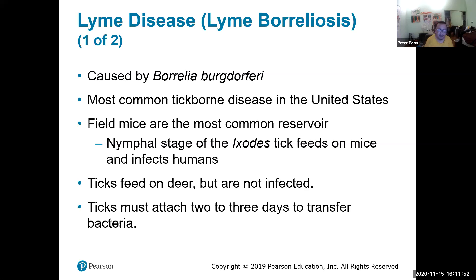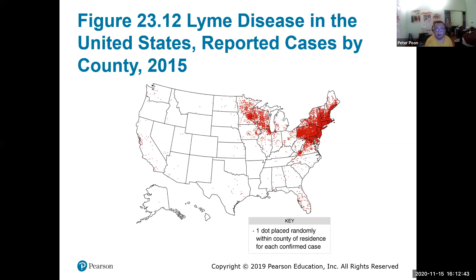Lyme disease is one of these diseases that is increasing in number. It's spread by deer ticks — they feed on mice, deer, and humans. They feed on the blood of the deer, pick up the bacteria, and then transfer it to humans. Lyme disease was named after Lyme, Connecticut, where it was originally discovered, but it's spreading throughout the U.S. Climate-driven seasonal changes are making it worse.